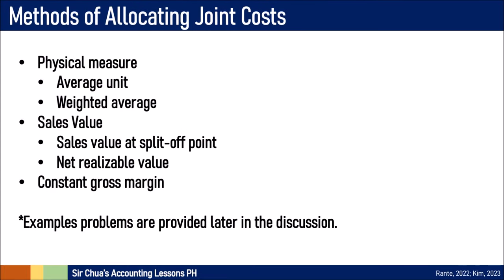Now that we've been discussing the allocation of joint costs to joint products, there are several different methods we can use. We can allocate by physical measure based on number of units — average unit, actual units, or by assigning weights. Or we can allocate based on sales value, of which there are two types: sales value at split-off point and net realizable value. There is also the constant gross margin percentage approach. You will understand all of these in detail when we get to our problem solving with actual numbers.